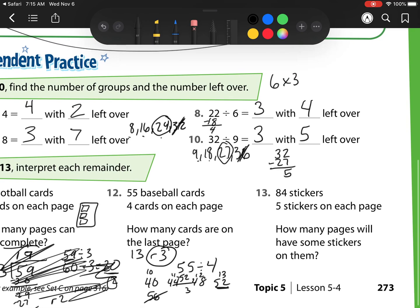My last one, 84 stickers, 5 stickers on each page. Well, I know that my easy numbers for dividing by 5 always end in 0 and 5. And this one, I would have 80. So how do I get to 80? Well, I can count by 5s. 5, 10, 15, 20, 25, 30, 35, 40, 45, 50, 55, 60, 65, 70, 75, 80.